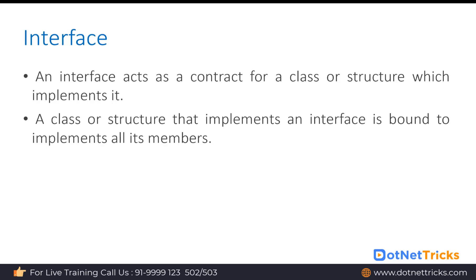If there is a change in the contract, there is always a dispute between the two parties. Similarly, when you change the interface members — like adding interface methods — the implementing classes and structures start showing errors. So when you add a new method that has not been implemented in the implementing class, you will start getting errors. That is the same as a change in the contract causing a dispute.